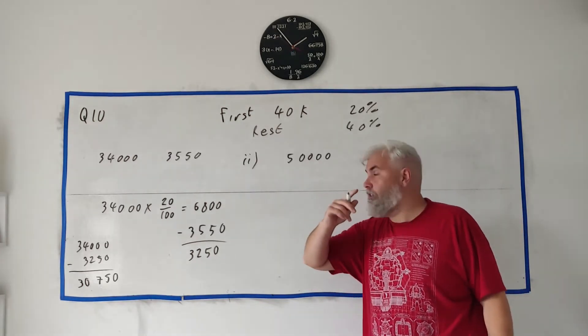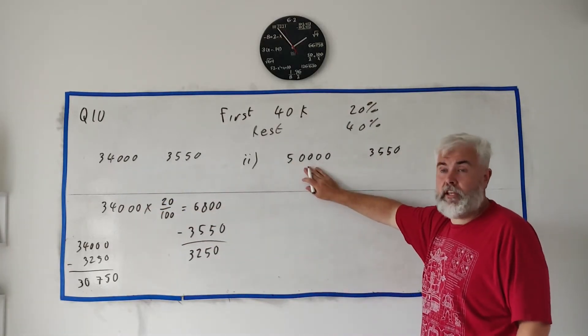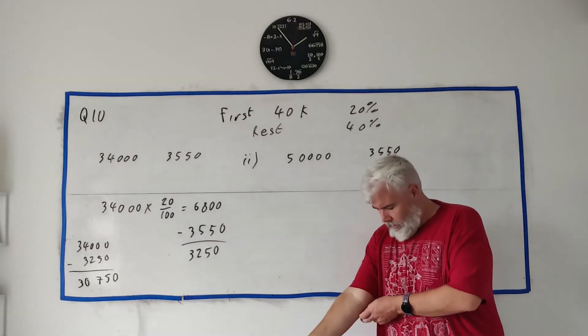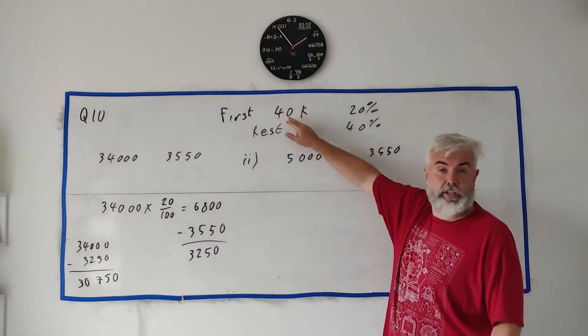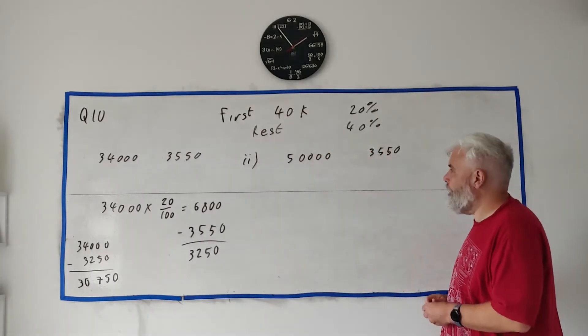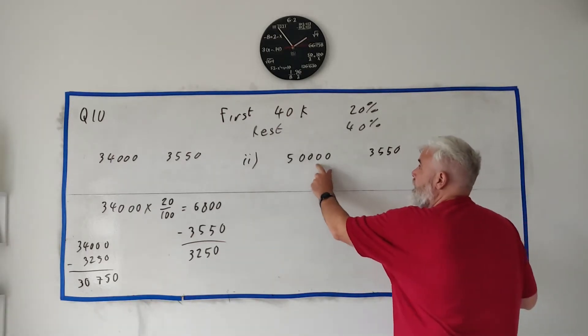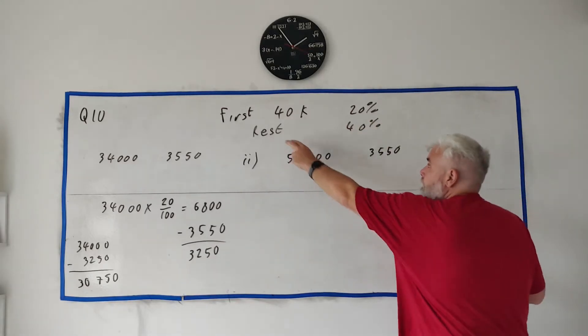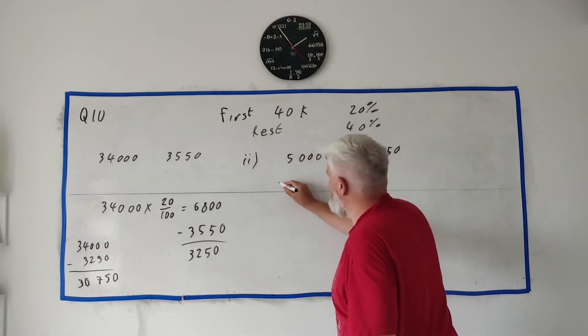In part two, instead of Olivia's €34,000, we have Caroline's €50,000. She has the same tax credits of €3,550. Now it gets more interesting because Caroline earns more than the €40,000 limit. So Caroline gets two piles of tax. The first pile is €40,000 taxed at 20%. The rest - well, how much more than €40,000 did she earn?